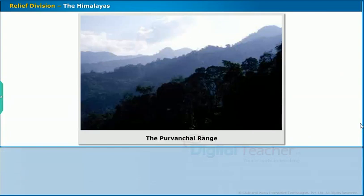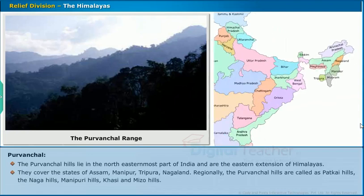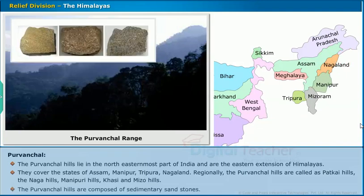The Purwanchal hills lie in the northeasternmost part of India and are the eastern extension of the Himalayas. They cover the states of Assam, Manipur, Tripura, and Nagaland. Regionally, the Purwanchal hills are called the Patkai Hills, the Naga Hills, Manipuri Hills, and Kasi and Mizo Hills. The Purwanchal hills are composed of sedimentary sandstones.